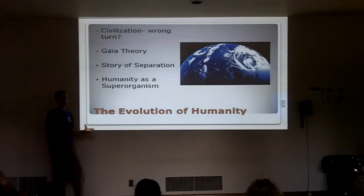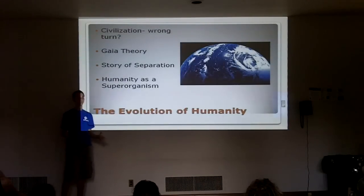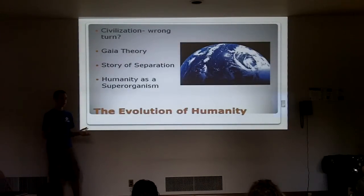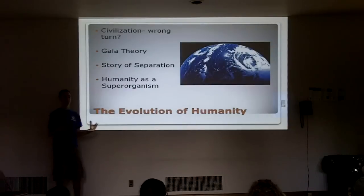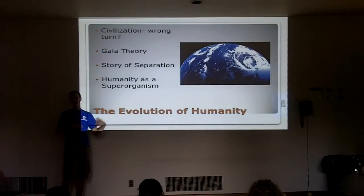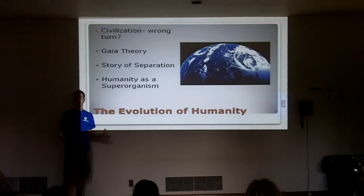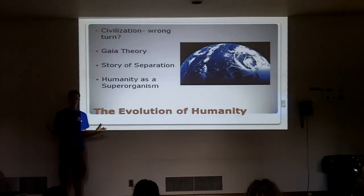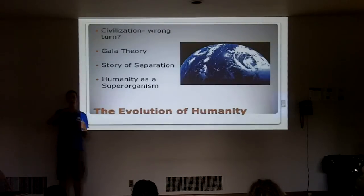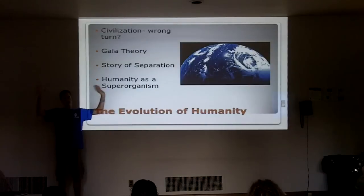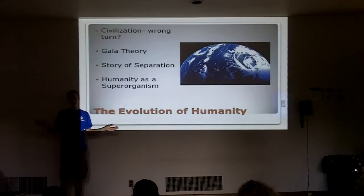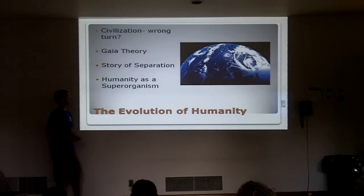There are a lot of different theories and perspectives on the evolution of humanity. Some people say we should have stayed hunter-gatherers, that agriculture and building civilization was a wrong turn. If we would have stayed as hunter-gatherers, we would have remained in equilibrium and in harmony with nature. Some people take on that perspective — that we just need to go back to that way of life.